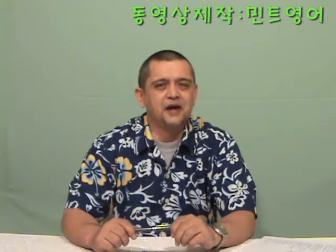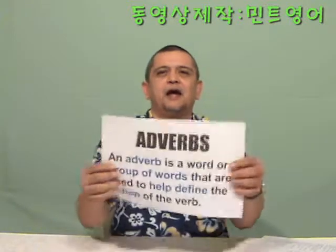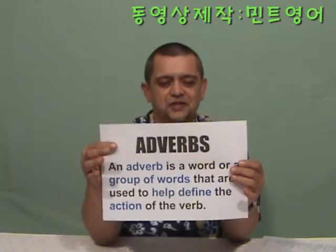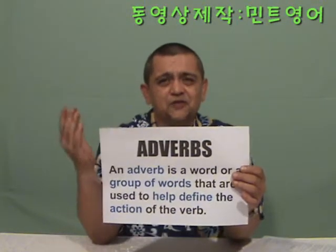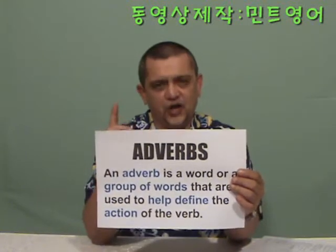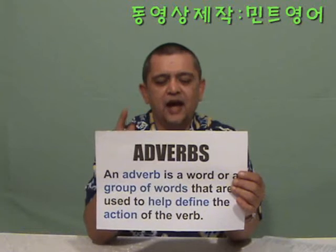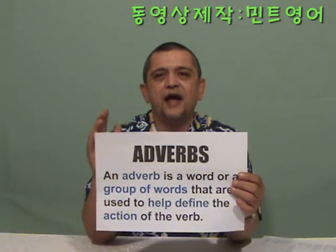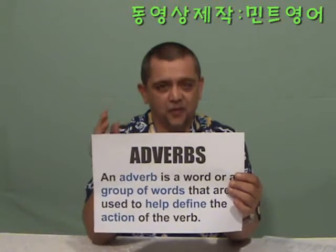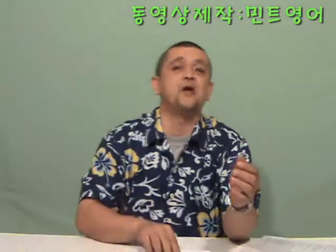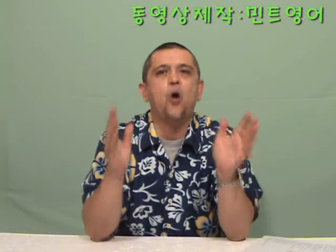Today, we're going to continue talking about the basics of English grammar, particularly the subject matter about adverbs. What is an adverb? Let's first define an adverb. An adverb is a word or a group of words that describe or modify an action word or a verb. You have to remember: an adverb is a word or a group of words that help define or describe an action or a verb.